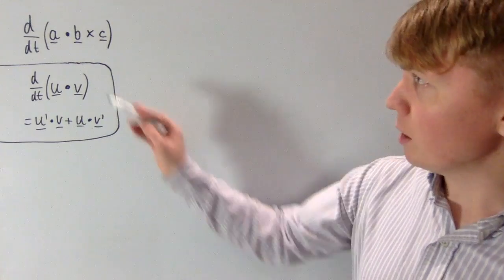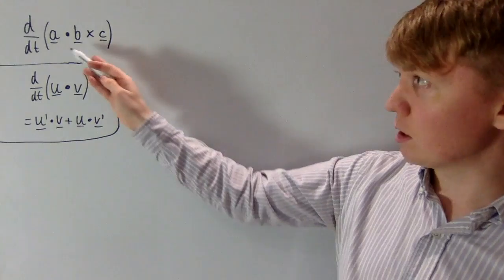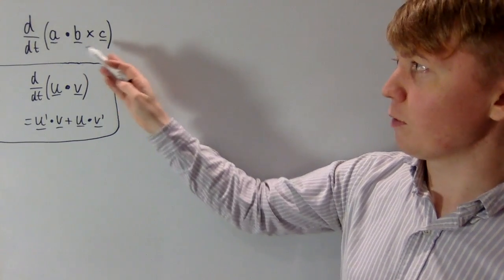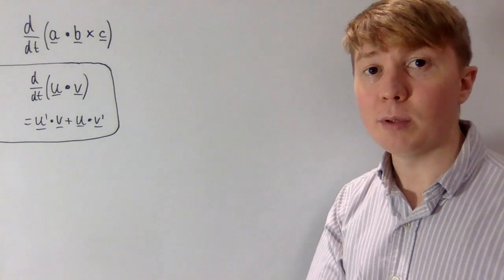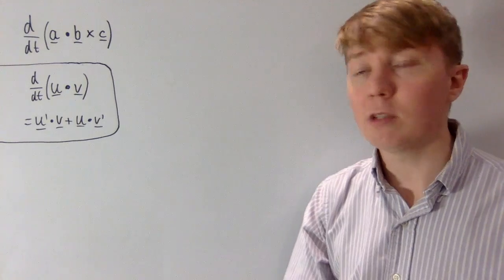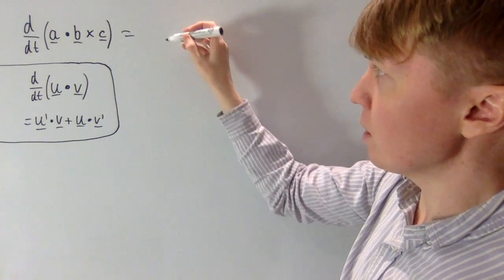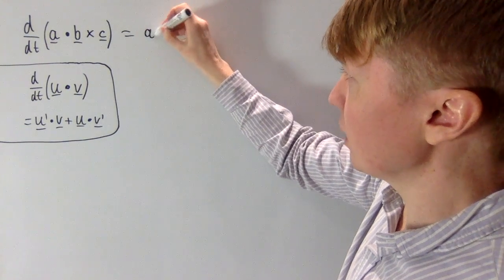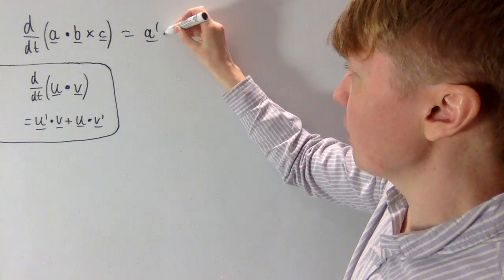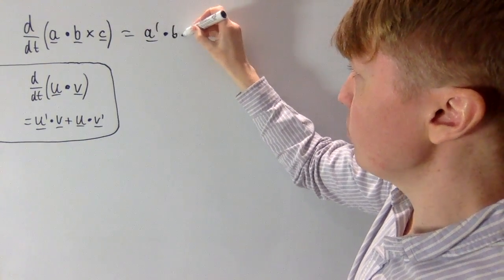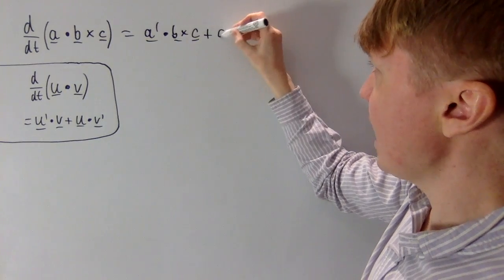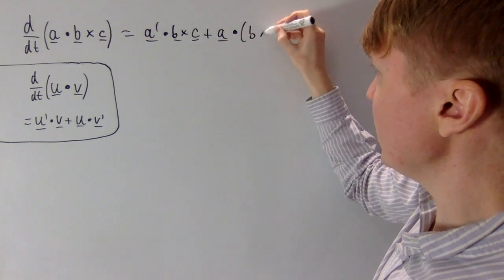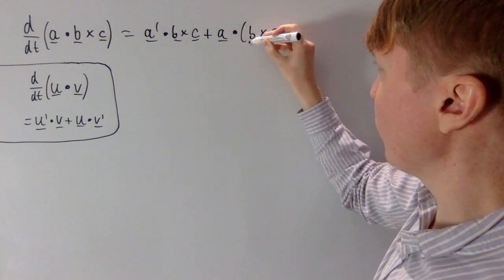We can now apply this to our original problem, since we need to differentiate the dot product of a with b cross c. Taking a as u and (b cross c) as v in our formula, we get a' · (b×c) + a · (b×c)'. The key question now becomes: what happens when you differentiate the cross product of two vectors?